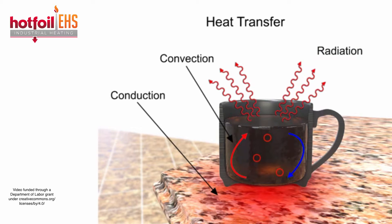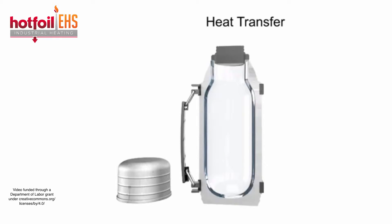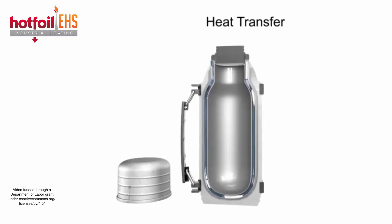One way to conserve the heat of a liquid and prevent heat transfer is to place it in a thermos. The use of a vacuum chamber with silvered surfaces along with low conductive materials can greatly improve the amount of heat or cold that is lost to the surrounding environment.